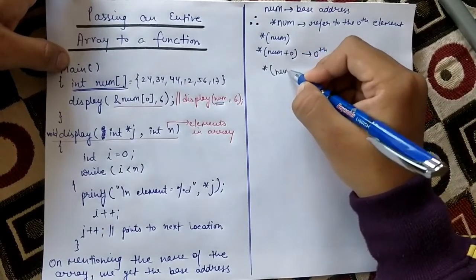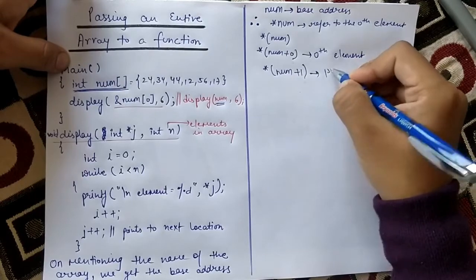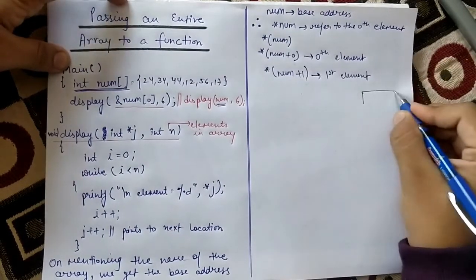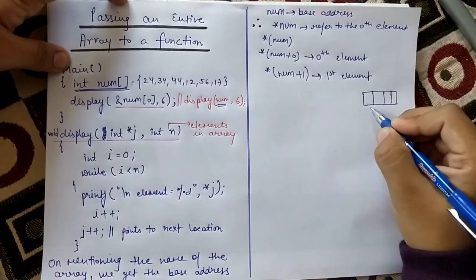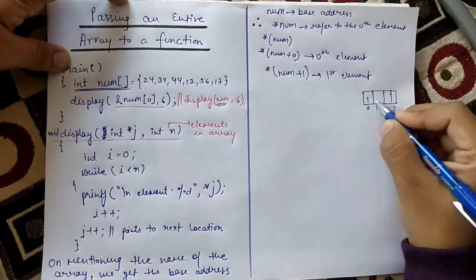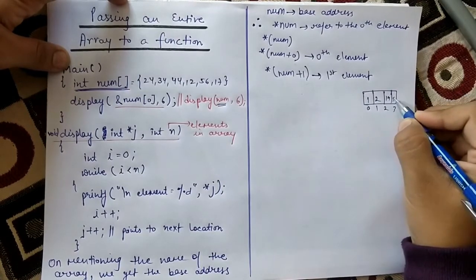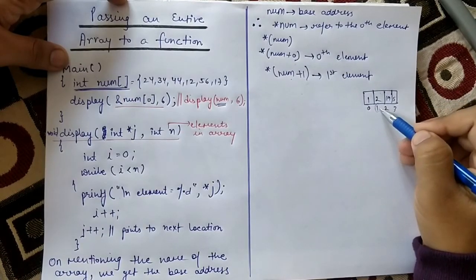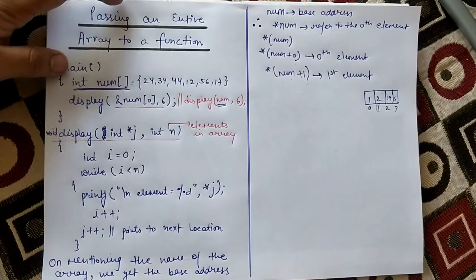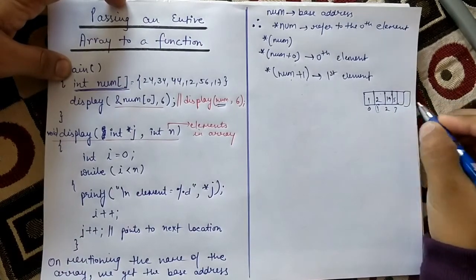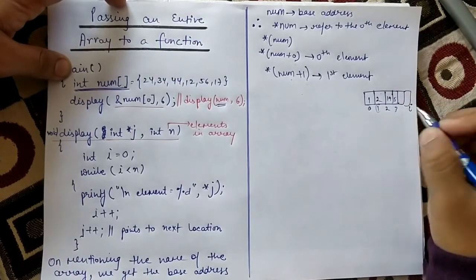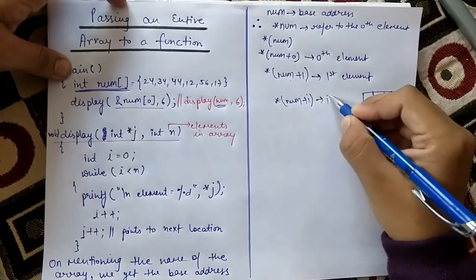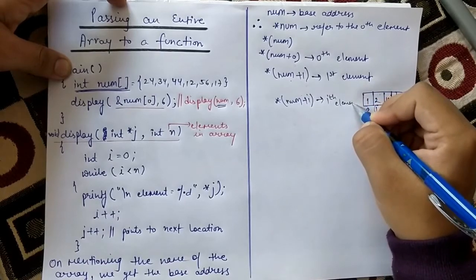Similarly, if I say `*(num + 1)`, it will represent the first element of the array. If we have the array with elements at index 0, 1, 2, 3 — zero is the zeroth element, one is the first element, and so on. So `*(num + 1)` means the first element. And if we have a long array and i is any index, then `*(num + i)` means the ith element of the array.